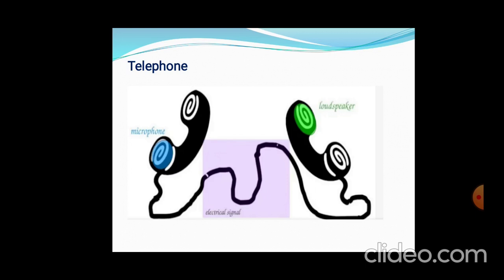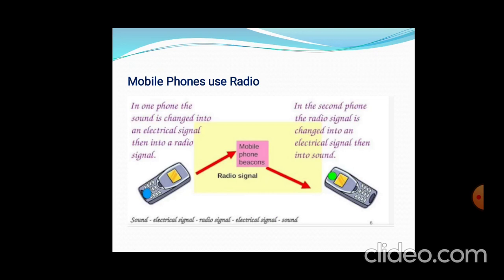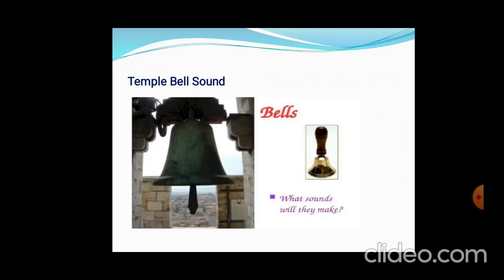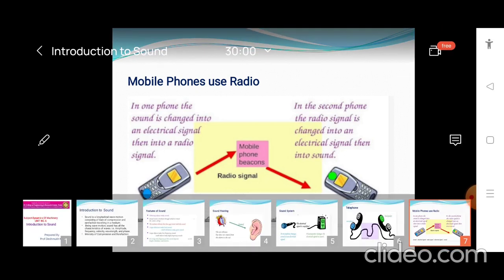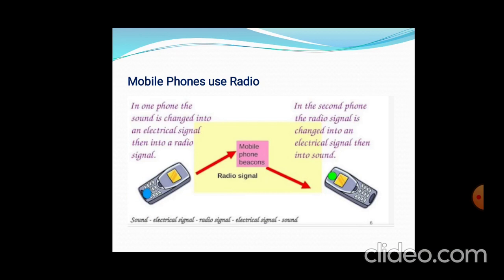Mobile phones use radio signals. In one phone, the sound is changed into an electrical signal, which is then converted into a radio signal. So the mobile phone changes sound into an electrical signal and then into a radio signal.